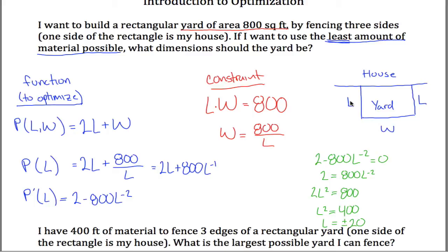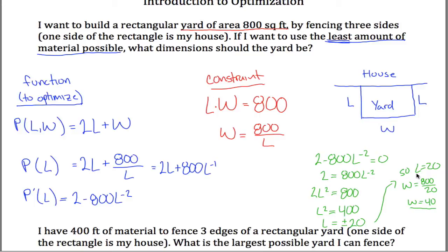Negative 20 doesn't make sense in context — I can't have a length of negative 20 — so L = 20. Using the constraint W = 800/L, we get W = 800/20 = 40. Since the question asked for dimensions, the yard should be 20 by 40 feet.